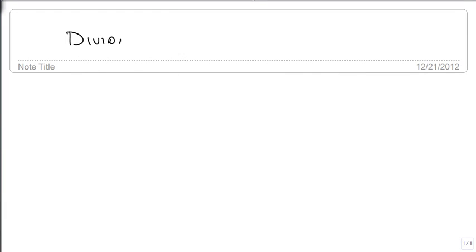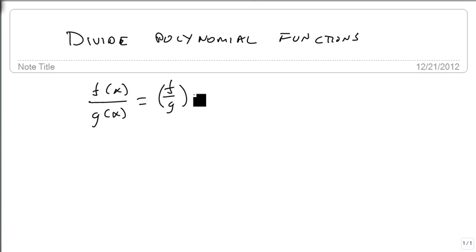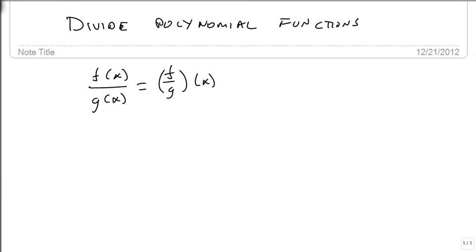We are going to divide polynomial functions. We'll start with the notation: f divided by g equals f divided by g. We're going to use the same rules we've just learned to find our new division function.